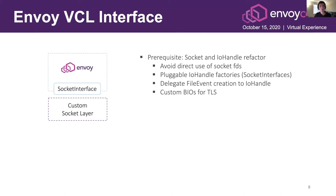We added support for pluggable IO handle factories — that is, support for multiple types of sockets. Another interesting consequence is that file event creation is now delegated to IO handle implementations. As a desired side effect, the socket layer that provides the IO handle is now the one that decides how events are created. In other words, socket events are no longer tightly coupled with libevent. An interesting scenario that serves as an example going forward was TLS, which mainly for convenience reasons relied on BIOs that needed explicit access to the FD. It eventually turned out that writing a custom BIO that uses the IO handle as opposed to the FD is relatively straightforward, so we switched to that.